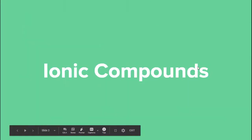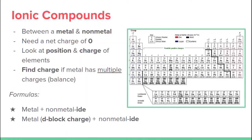Ionic compounds are between a metal and a non-metal, and we need a net charge of zero. So let's take sodium as our metal and oxygen as our non-metal. Sodium's charge is plus one, but oxygen's charge is negative two. Right now that plus one and negative two don't balance each other out.